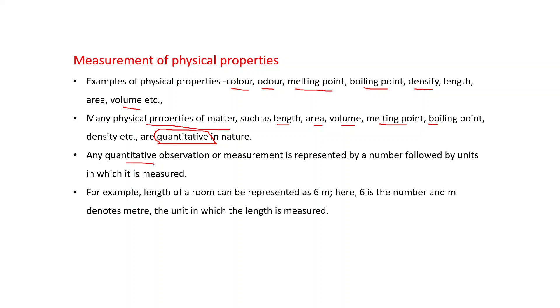Any quantitative observation or measurement is represented by a number followed by units in which it is measured. For example, length of a room can be represented as 6 meter, where 6 is the number and the small m denotes meter, the units in which the length is measured.